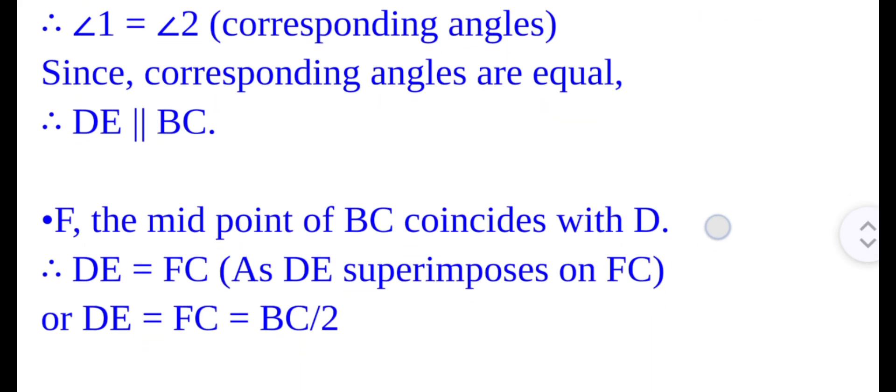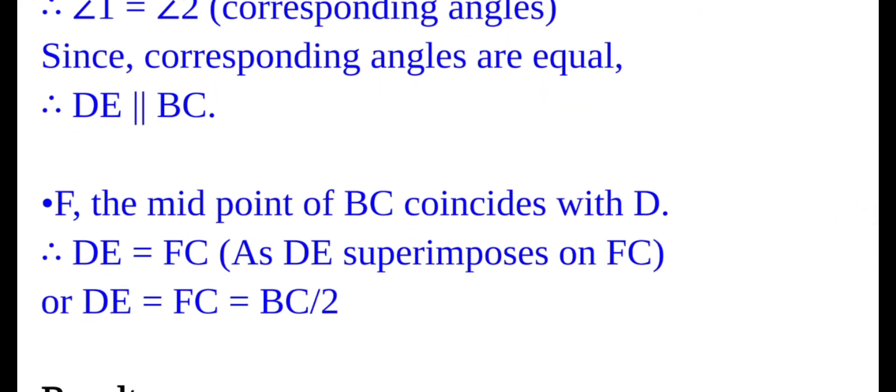And as we have seen, F is the midpoint of BC, which coincides with point D. It means DE is equal to FC. As DE superimposes on FC, it means DE is equal to FC, which is equal to half of BC.